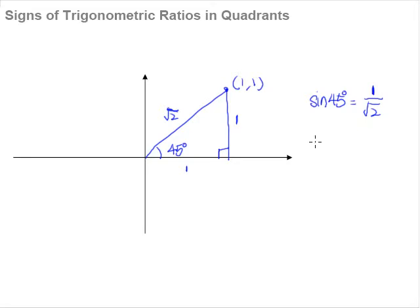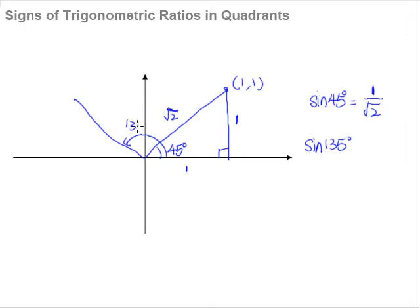Now let us take a look at sine 135 degrees. So just where is 135 degrees? We know from the fact that 135 degrees is an obtuse angle, so it will be in the second quadrant. So let us draw briefly how our 135 degrees will look like. And of course, if this is 135 degrees, then this angle here will have to be 45 degrees as well.